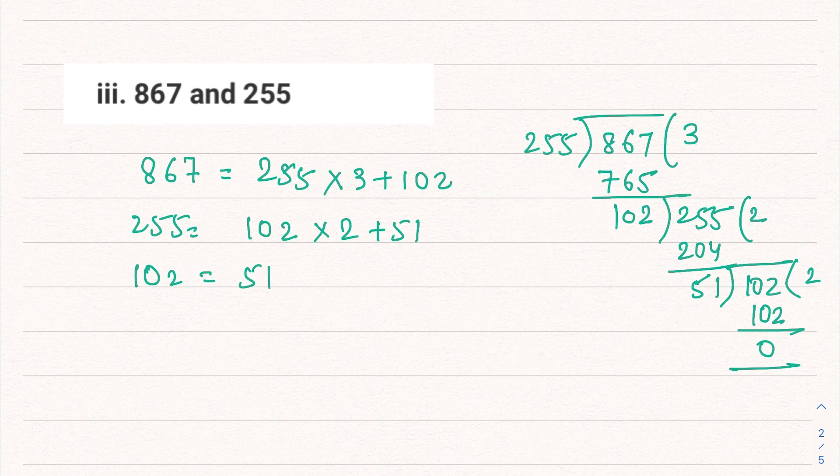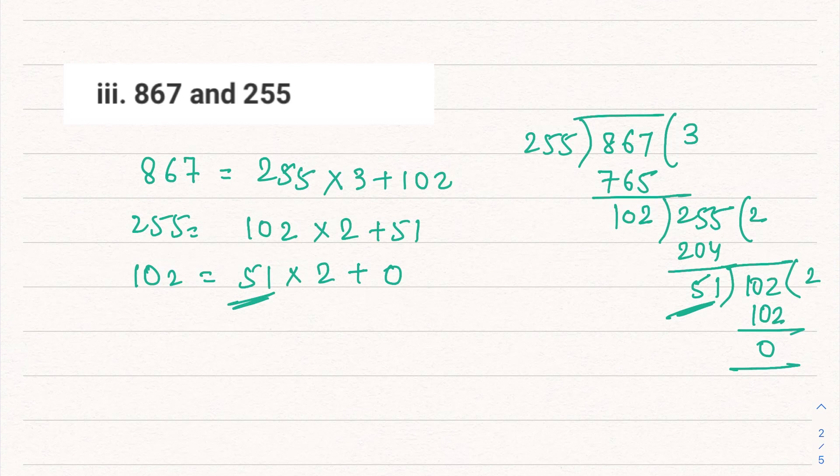We reach the remainder 0. 102 can be written as 51 into 2 plus 0. So here the last divisor is 51. Therefore the HCF of these numbers is 51. If you like the video, please like, share, and subscribe. Thank you.